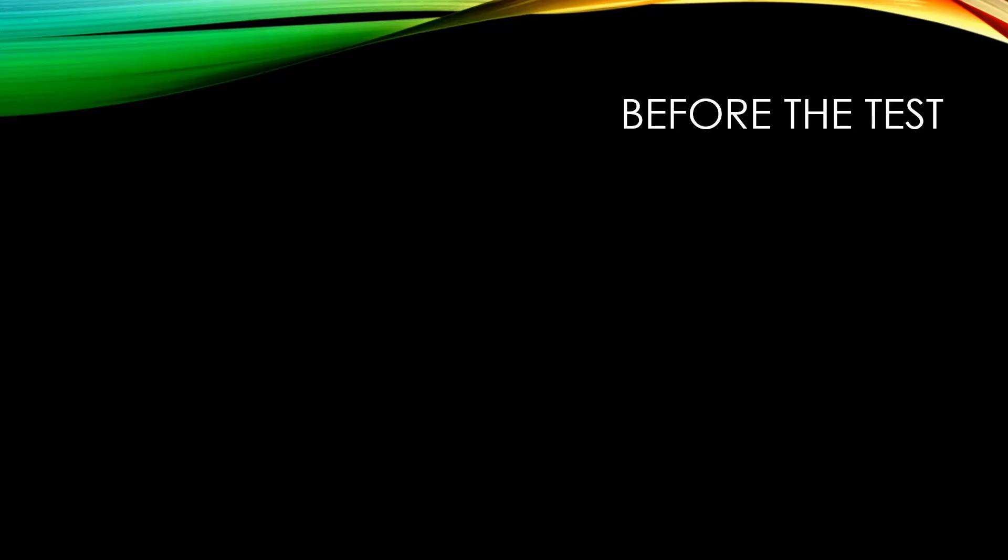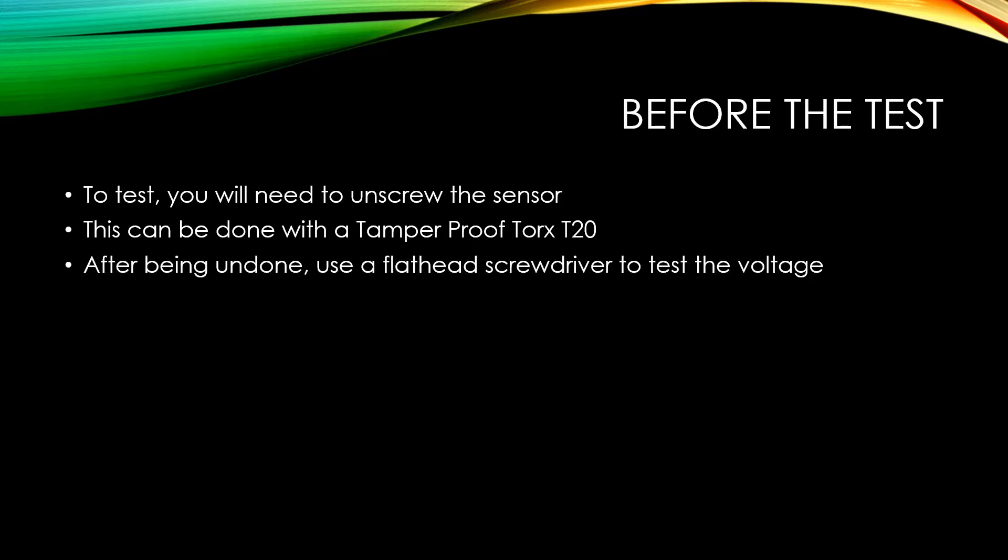Before testing your pedal, we need to cover a few things. You will need to unscrew the sensor itself that mounts on the pedal that you're working on. This can be done with a tamper proof Torx T20 or a six star that is T20 sized. After being undone, you're going to use a flathead screwdriver to test the voltage by twisting it towards or away from you.